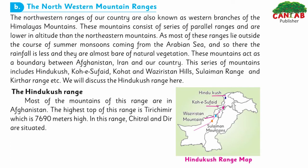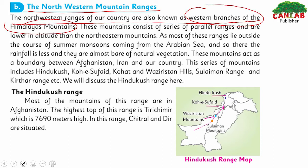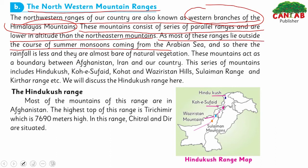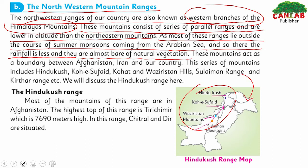The North-Western Mountain Ranges — that is the Hindu Kush ranges — are also known as the western branches of the Himalayas. These mountains consist of a series of parallel ranges and are lower in altitude than the northern mountains. Since most of these ranges lie outside the course of the summer monsoon coming from the Arabian Sea, rainfall is less and they are almost bare of natural vegetation.